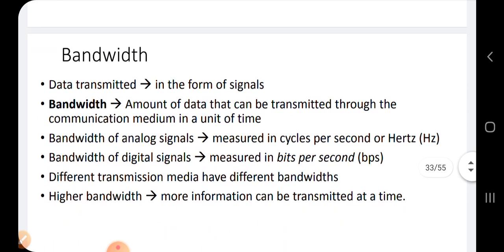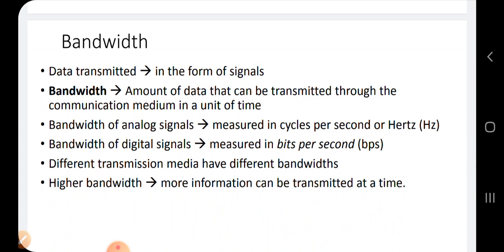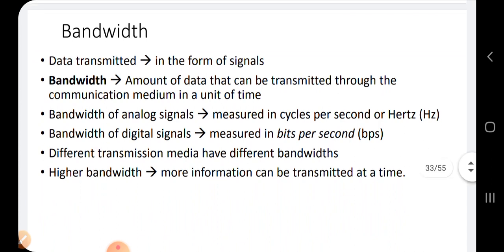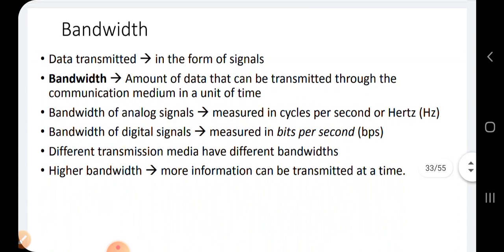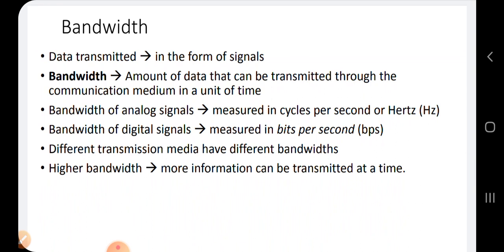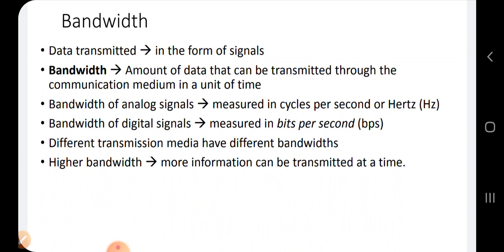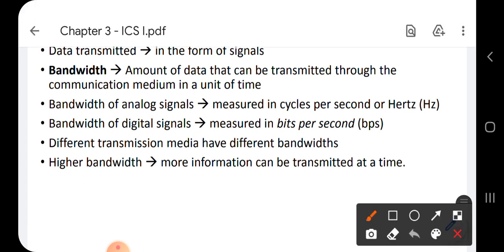Now what is meant by bandwidth? You know that data is transmitted in the form of signals. Signals can be analog as well as digital. These signals travel through a communication channel or transmission channel, which can be cables or wireless. The transmission channel — how much data can travel in a unit time — is what we call bandwidth.